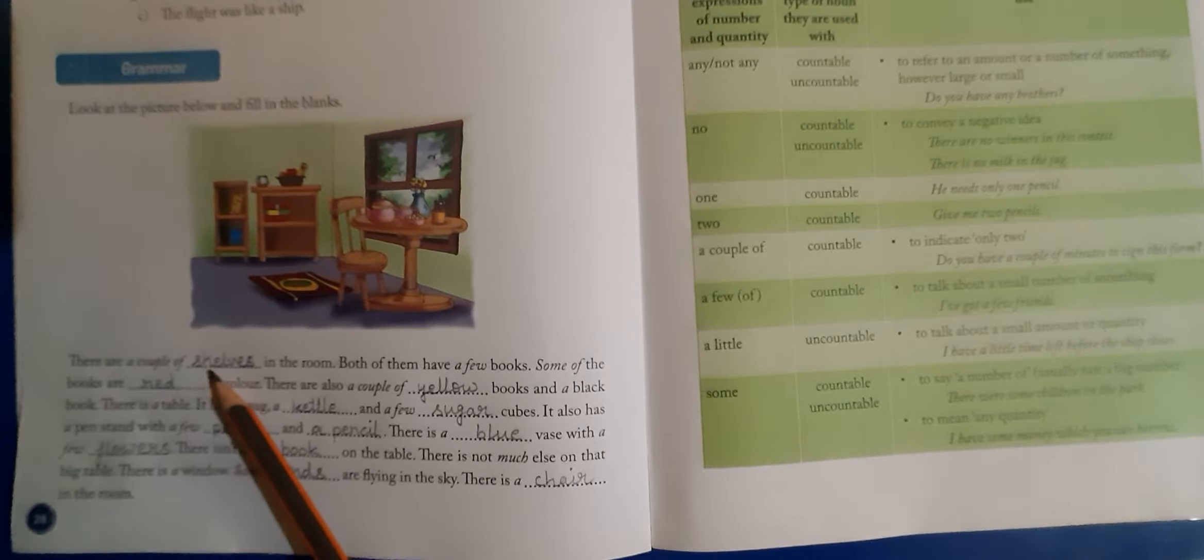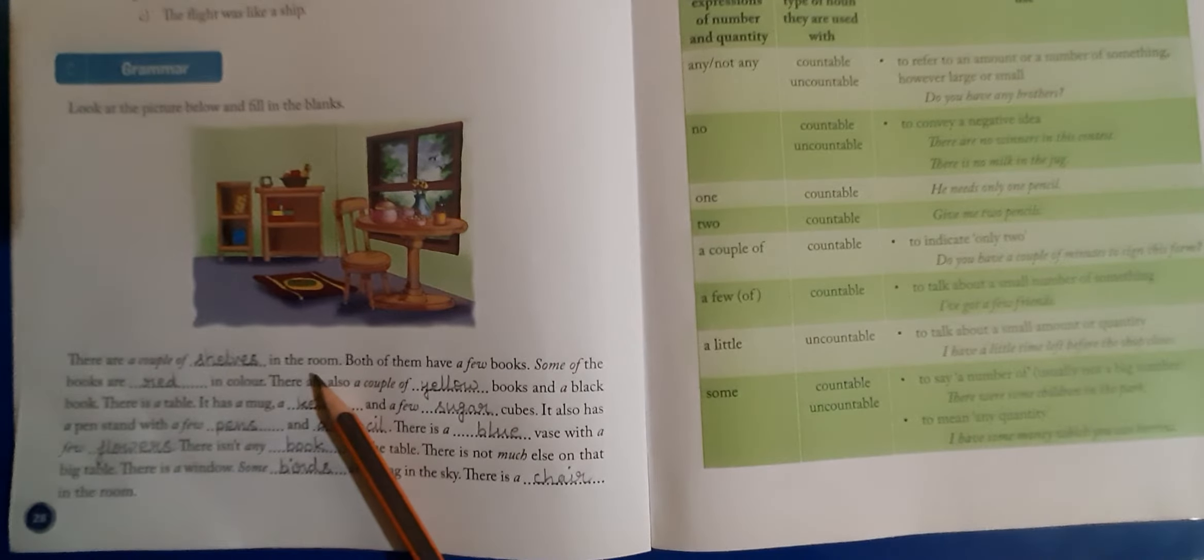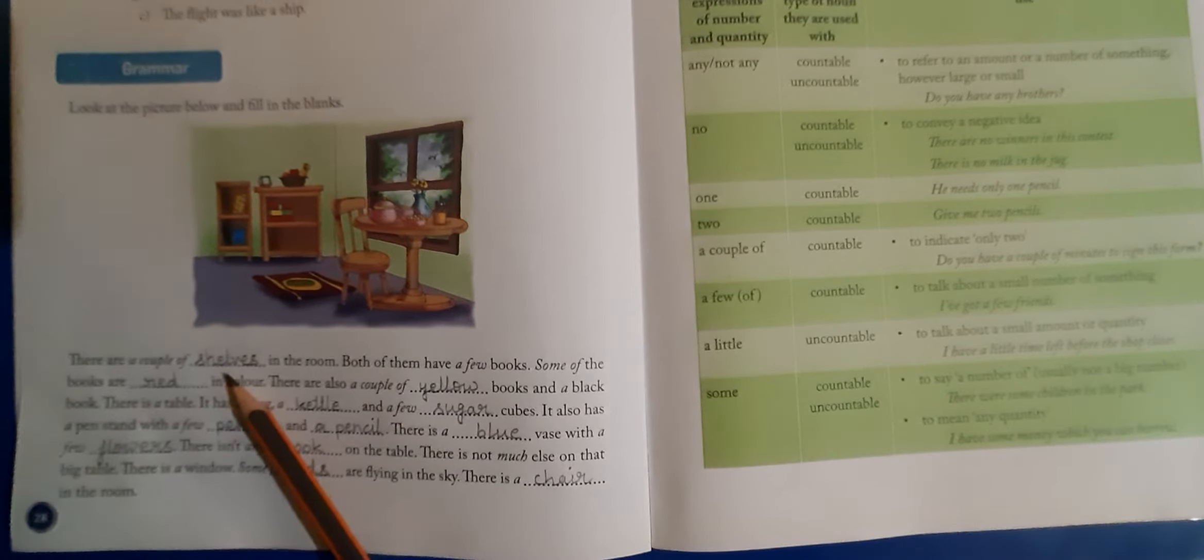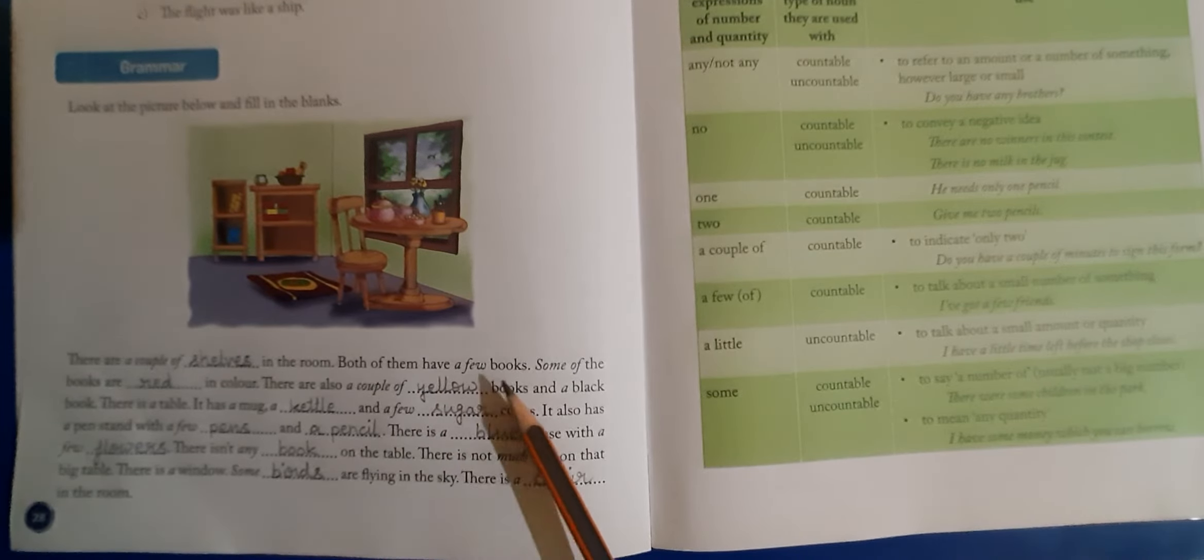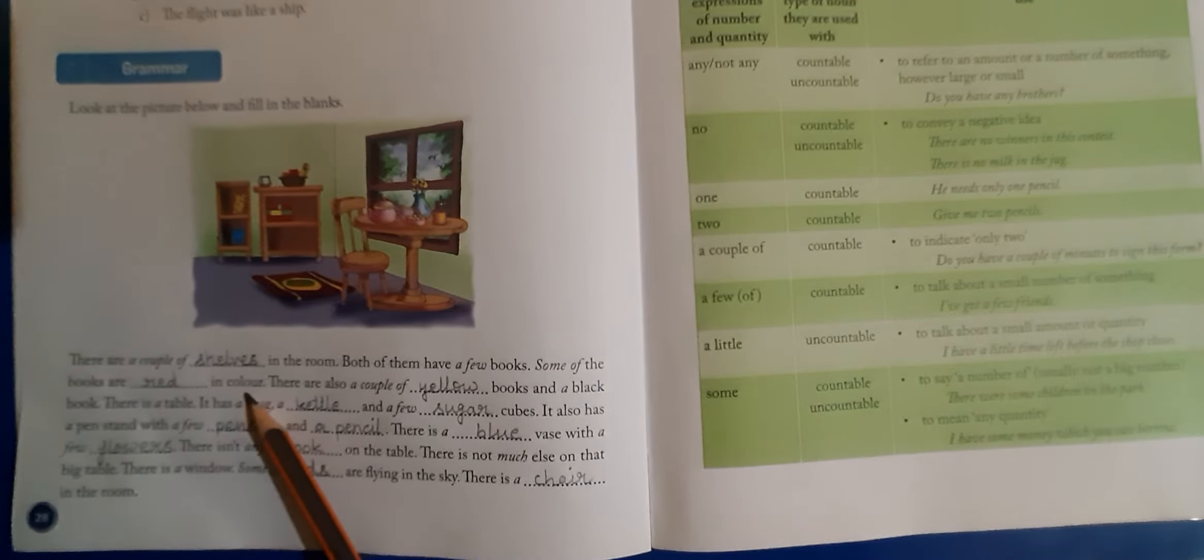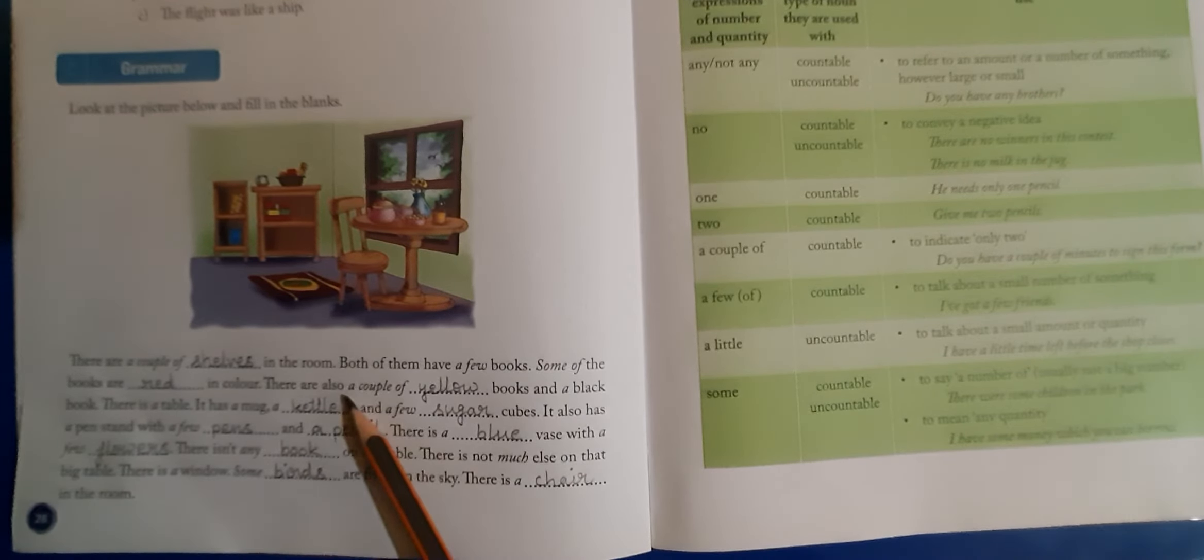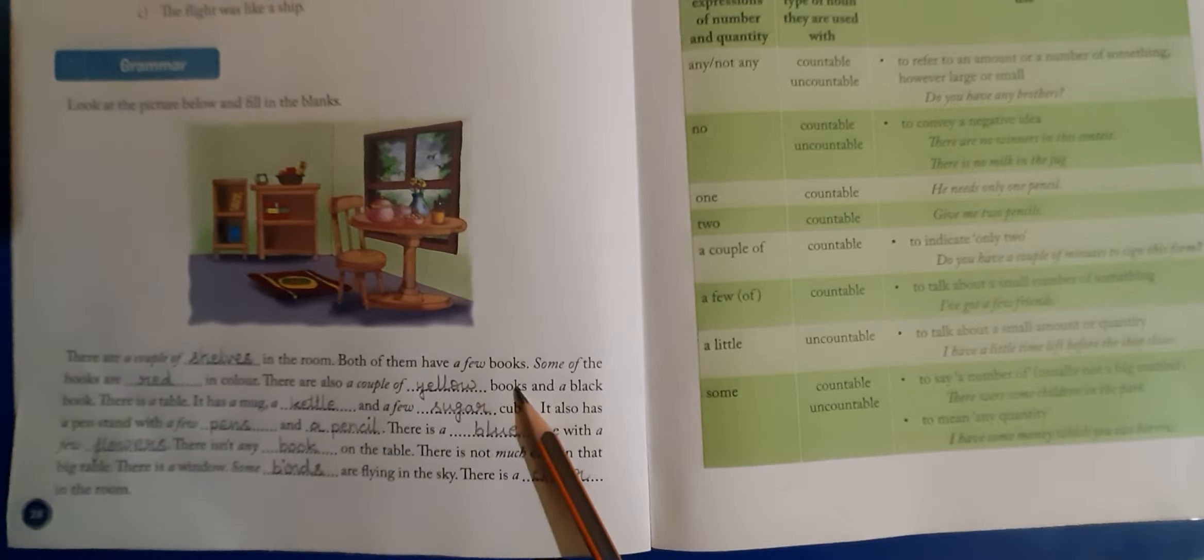There are a couple of cells in the room. Cells. Both of them have a few books. Some of the books are red in color. There are also a couple of yellow books.